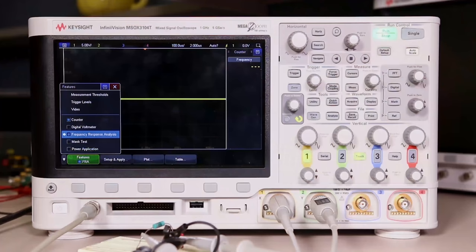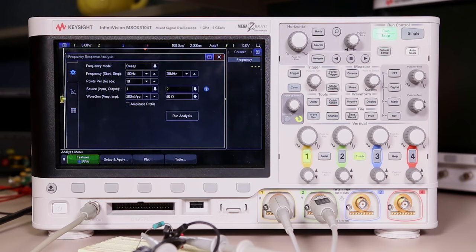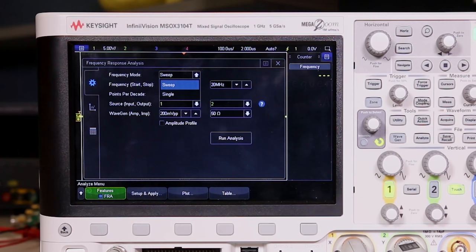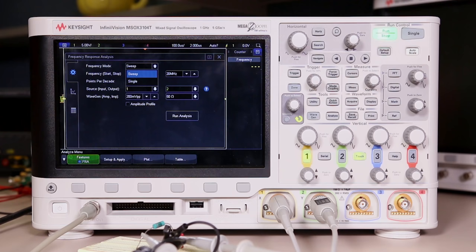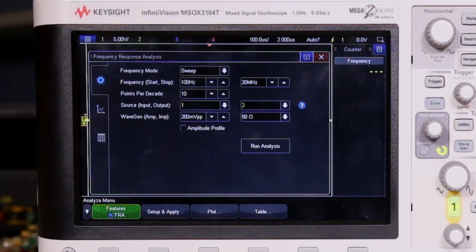And we can see the first menu is the setup and apply menu. This is where you can configure the settings for the specific tests that you're working on. You can set up a frequency sweep which is most typical but you can also change the frequency mode to single just to test at a specific frequency. And this is helpful when you know there's a problem area in your device. You can also adjust the start and stop frequencies that the wave gen will sweep between along with the source and the amplitude of the signals.